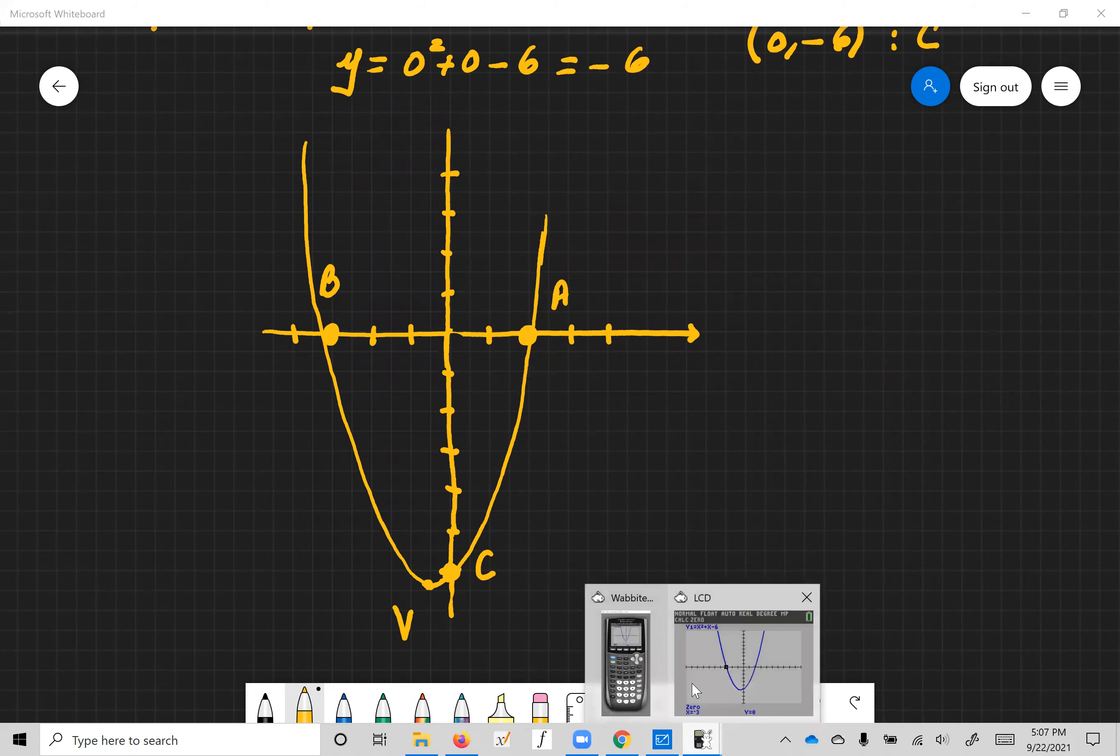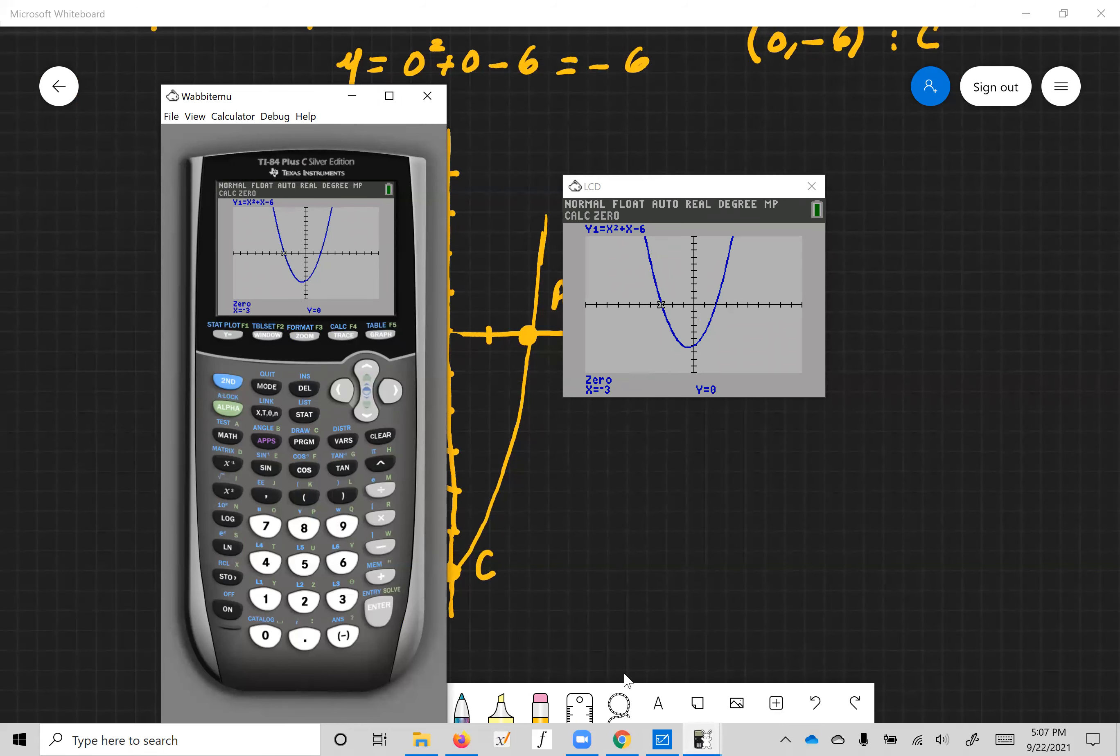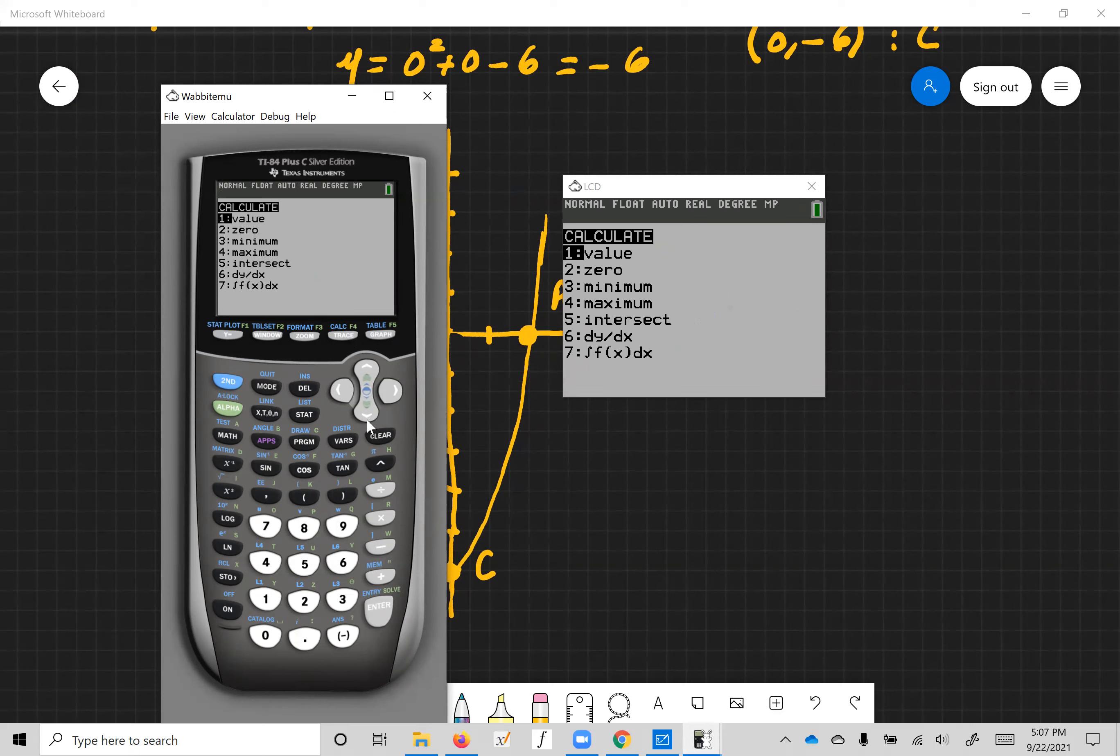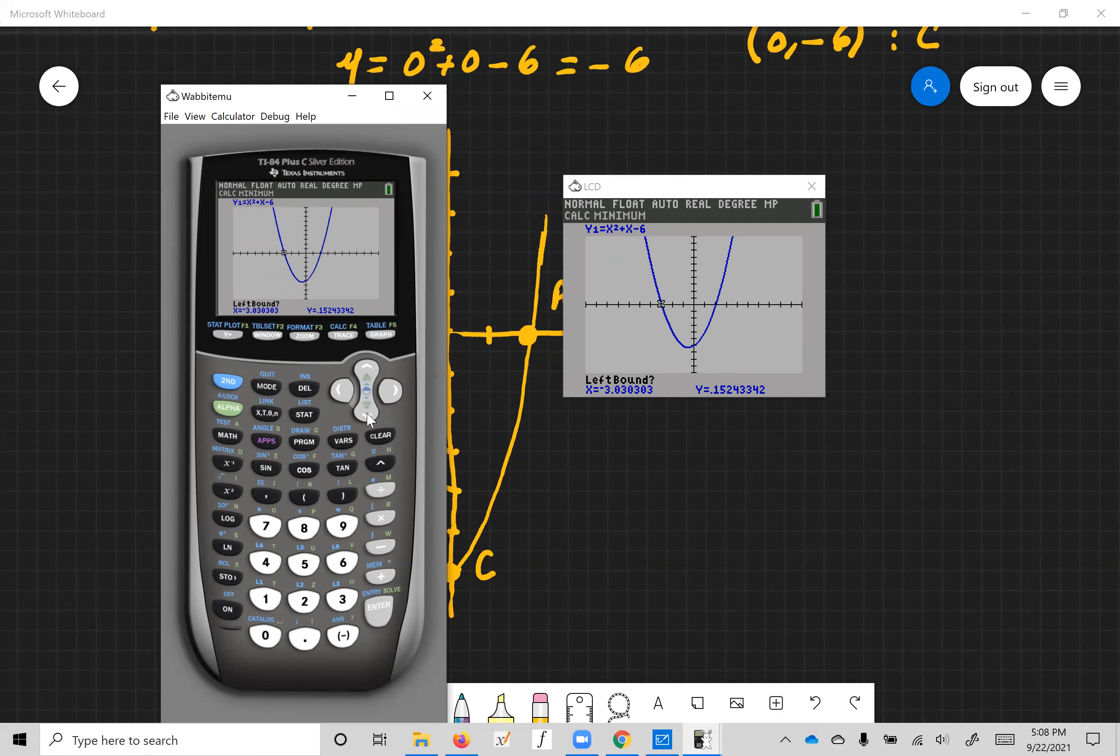Now let's find the vertex. Remember the vertex is the lowest point or the minimum point on the parabola in this case. So we need to find the minimum. Let's again go to that function here, calc. Let's find the minimum, so let's find number three. So we need to be to the left of what we think is the minimum. Bring it close, close, there it is, that's good. Then move it now to the right of what appears to be the minimum, the vertex. That's good enough. And now a third time, there it is. X is negative 0.4999, basically negative 0.5 or negative a half, and then y is negative 6.25 or negative 25 over 4. And we computed correctly.